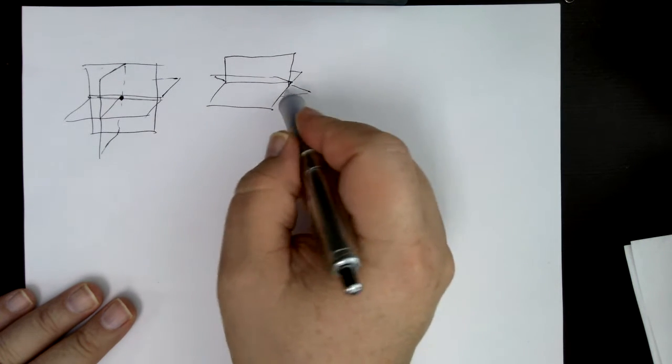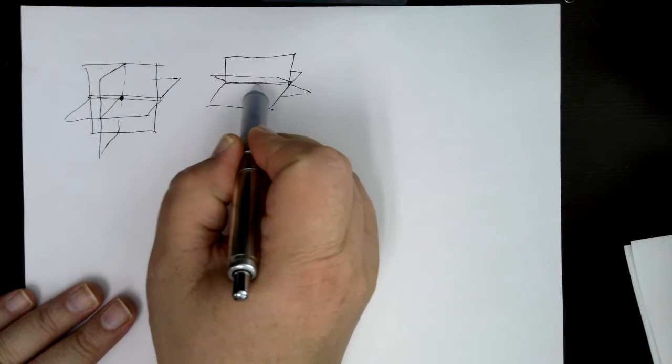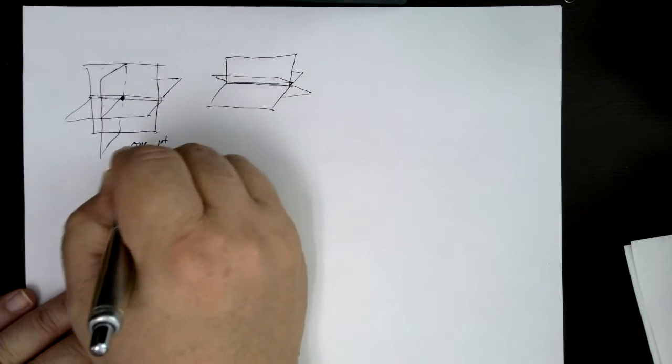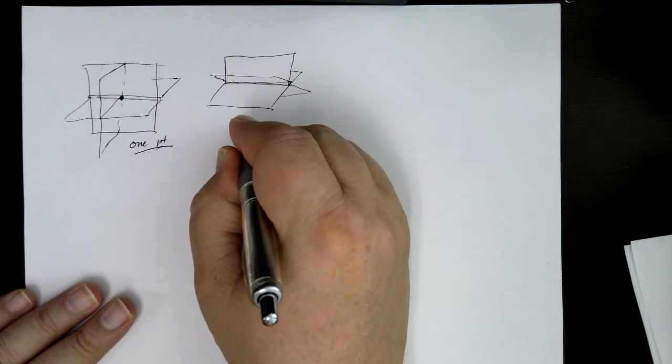And then in that case, this line would be the sets of intersection. So here you would have one point for the solution. Here you would have an infinite number.